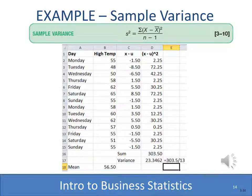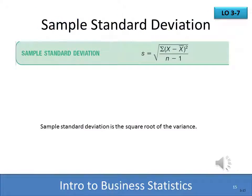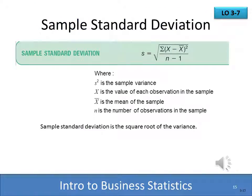This time we're going to compute the sample variance using those same two weeks of high temperatures. Instead of assuming it's a population — where we were only concerned about those two weeks — maybe this is a larger period and this is a sample of 14 days. Everything else is the same, except notice we're dividing by 13 instead of 14, and our variance is slightly different for the sample than for the population. Just as the population standard deviation is the square root of the population variance, so also the sample standard deviation is the square root of the sample variance.